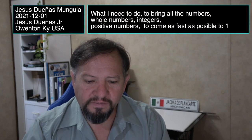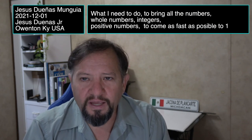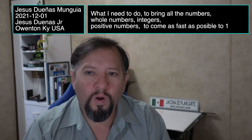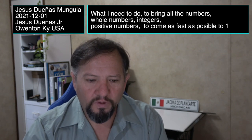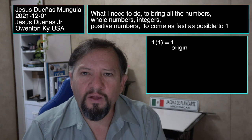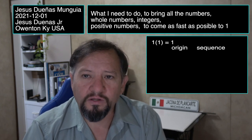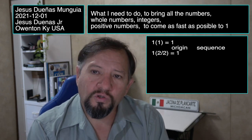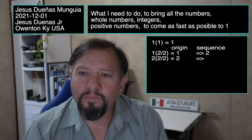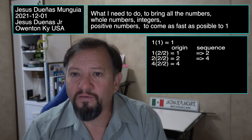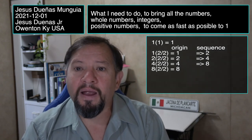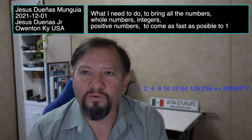I'm going to ask myself: what do I need to do to bring all whole number integers to one as fast as possible — meaning in the least steps? Starting with 1: 1 times 1 is 1. Then I make it 2 over 2, which is still 1. So 1 multiplied by 2 gives 2, divided by 2 comes back to 1. With 2: 2 times 2 is 4, divided by 2 comes back. With 4: 4 times 2 is 8, divided by 2 comes back.